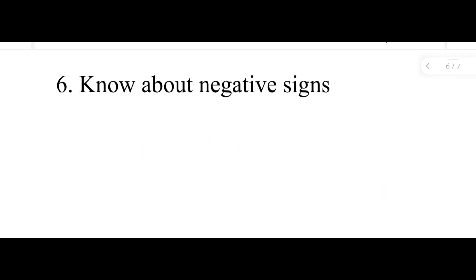Sixth, know about negative signs. You should always be aware of the signs. Suppose the distance parameter is given as five meter, minus five meter, ten meter, and twenty meter. If the correct answer's magnitude is five meter, they may give negative value options to confuse you. In such cases, you should remove the negative values and be aware of the signs to identify which option is correct.